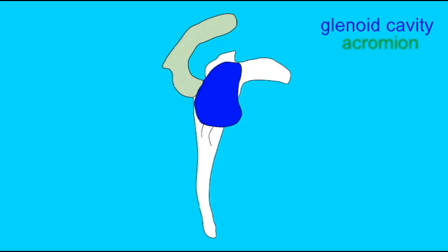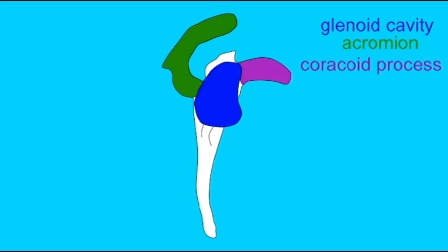The acromion and the coracoid process of the scapula. The acromion is the larger of the two processes, and is continuous with the spine of the scapula, so this can be easily felt with your fingers.